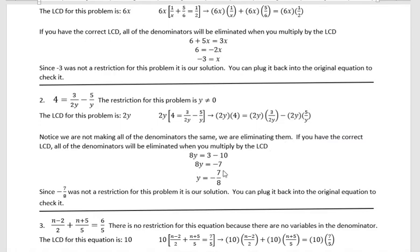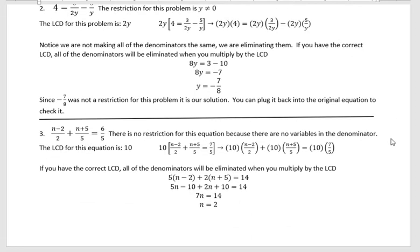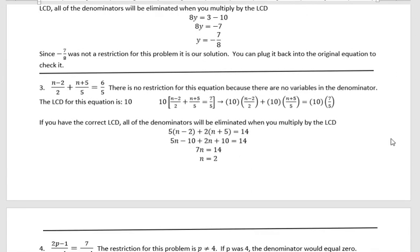Now we're going to subtract. 3 minus 10 is negative 7, and then we divide both sides by 8. That gives us y equals negative 7/8. Negative 7/8 was not a restriction for this problem, so it is our solution. You can plug it back into the original equation to check it.